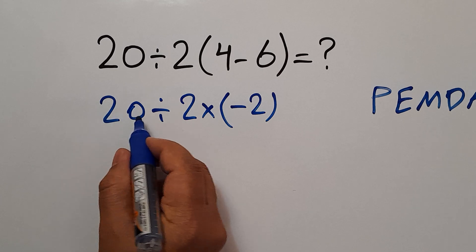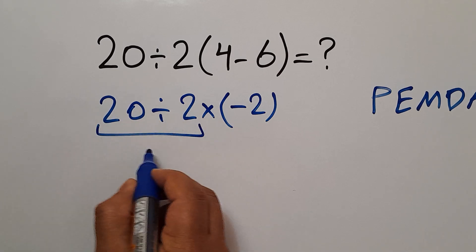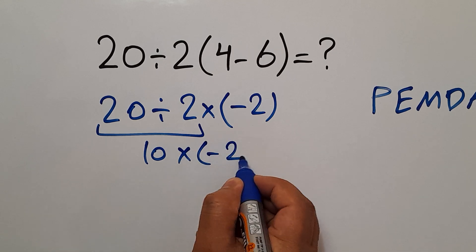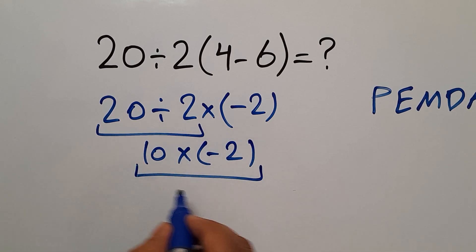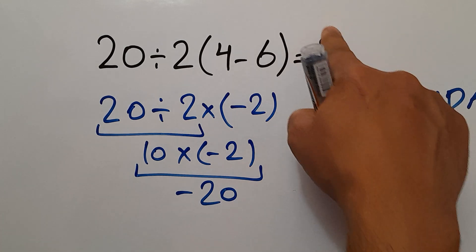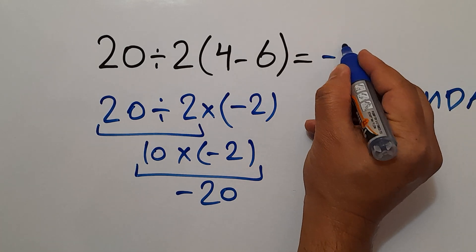So 20 divided by 2 equals 10, then times negative 2. And this is equal to negative 20. So our final answer to this problem is negative 20.